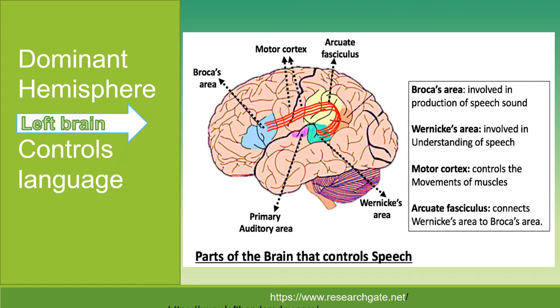In the right lower corner is Wernicke's area, which controls comprehension. The left upper corner is Broca's area, which controls talking.